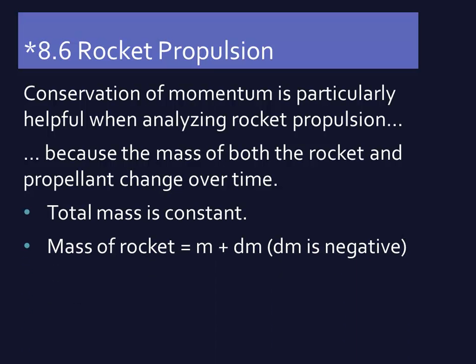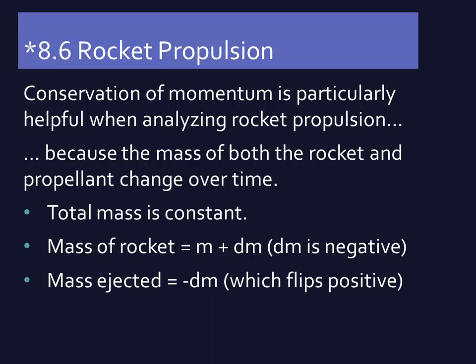The mass of the rocket equals mass times the differential of mass — that is the incremental change of mass in calculus notation. The change in mass for the rocket is going to be negative; this differential dm is going to be negative because the rocket is losing mass as the fuel is spent. The mass ejected is the opposite of the dm of the rocket, and since the negative of a negative is a positive, the mass ejected is going to be incrementally larger — it flips positive because the change in mass of the rocket is negative.